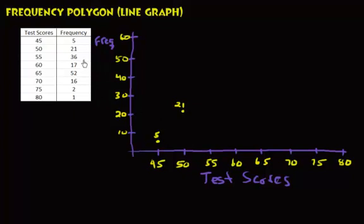Score of 55, we have 36 students, so let's go up to 36, which is about right there. Score of 60, we had 17—about right there.